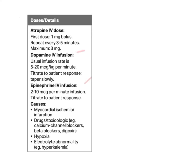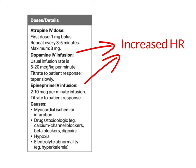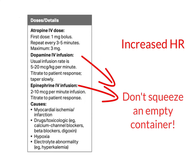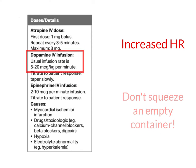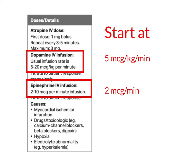Epinephrine and dopamine both have chronotropic properties, meaning they will speed up the heart rate. They are also both vasoconstrictors, which means you must make sure your patient is not hypovolemic before using them. Which of these two drugs you use will be determined by provider preference or local protocol, and it is generally a good idea to start the infusion at the lower end of the accepted range and increase slowly until heart rate and blood pressure improve.